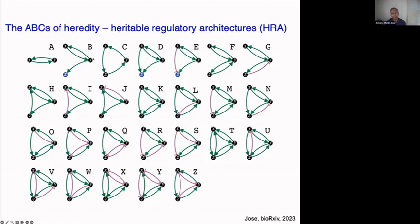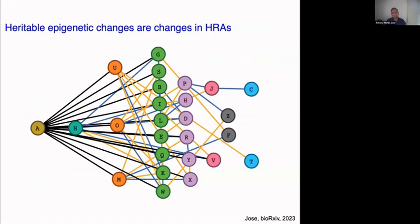We can conveniently list 26 basic heritable regulatory architectures — think of them as A through Z. A striking feature is that green arrows go into every node, which is the basic requirement for an entity to persist across generations rather than being diluted or degraded. Anytime you have negative regulation — indicated by magenta bars — it must be balanced with positive regulation. From this alphabet we can enumerate how changes arise; some architectures like 'A' arise at high frequency, while others like 'CNT' arise very rarely.